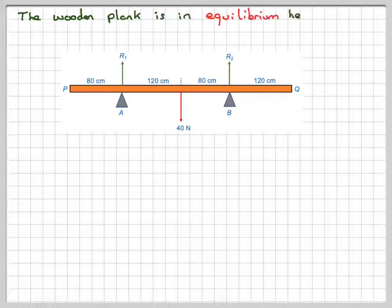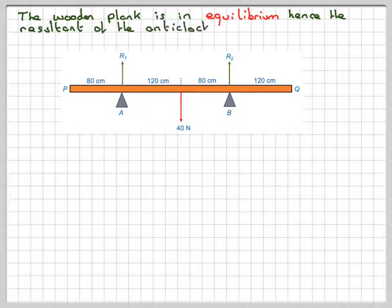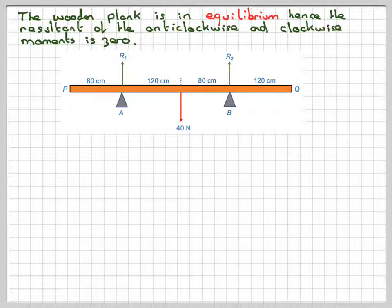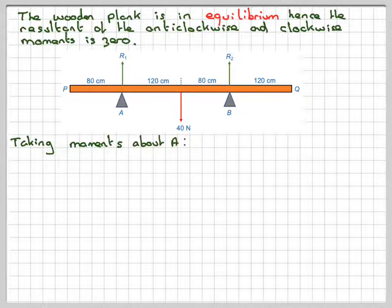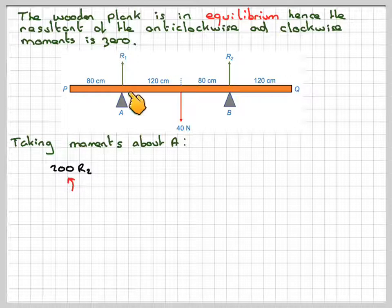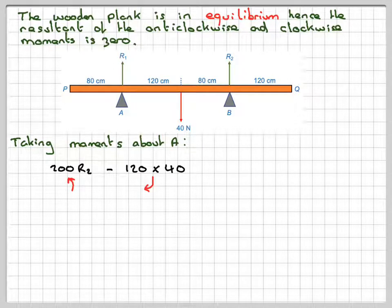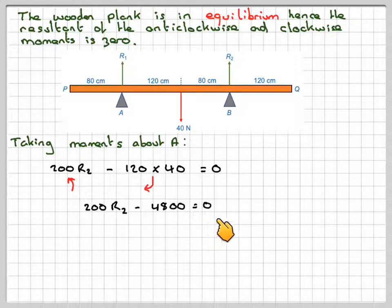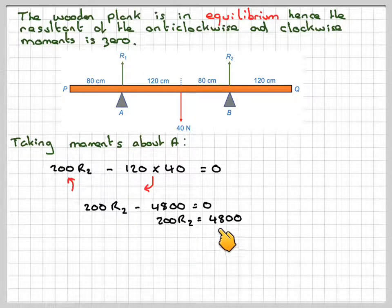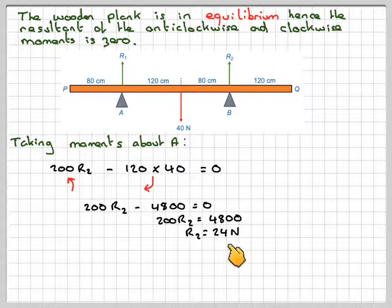So the wooden plank is in equilibrium, i.e. it's not moving. Hence the resultant of the anti-clockwise moments and clockwise moments is zero. So if we just take moments about any point, we can choose A or B, it doesn't matter. So taking moments about point A, the anti-clockwise moments will be 200, so that's 120 plus 80 times R2. And because it's in equilibrium, we'll have to take away from that 120 times 40, and that would be equal to zero. So that would mean that 200R2 minus 4800 is equal to zero, and therefore 200R2 is equal to 4800, and therefore R2 will be equal to 24 newtons.